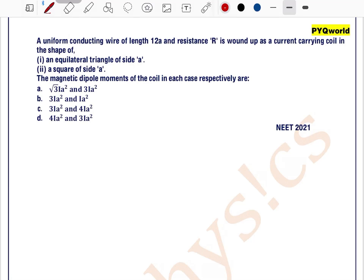A uniform conducting wire of length 12a and resistance capital R is wound up as a current carrying coil in the shape of an equilateral triangle of side A.